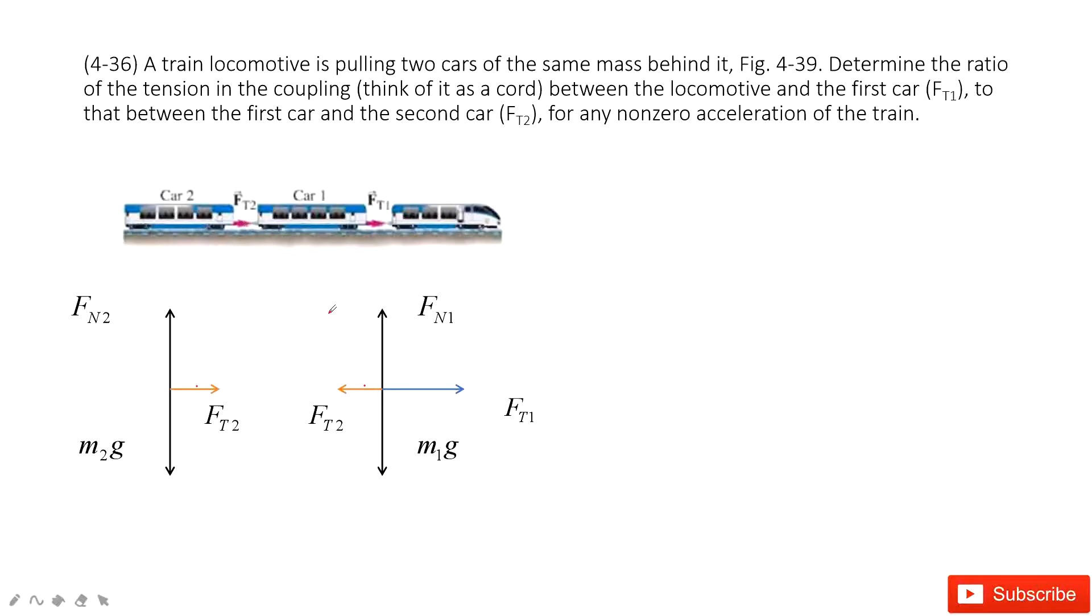Now we can consider, when we consider this train speeding up or slow down or just keep constant velocity, we just consider the horizontal direction. And then look at the horizontal direction, we can write the equation for car 1 look like that. FT1 minus FT2 is mass times acceleration.